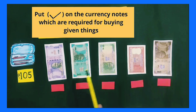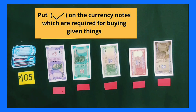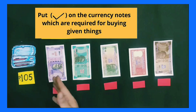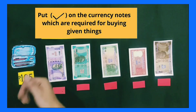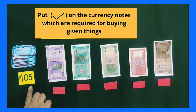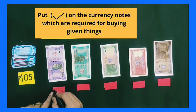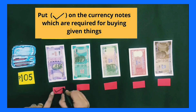Let's start with the first part. One geometry box is given and its cost price is 105 rupees. We have to choose those currency notes which are required for buying the geometry box. The cost price is rupees 105, so we take one note of 100 rupees. We put a tick under the box of the 100 rupee note.